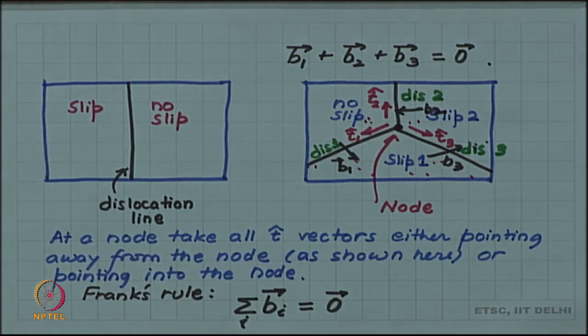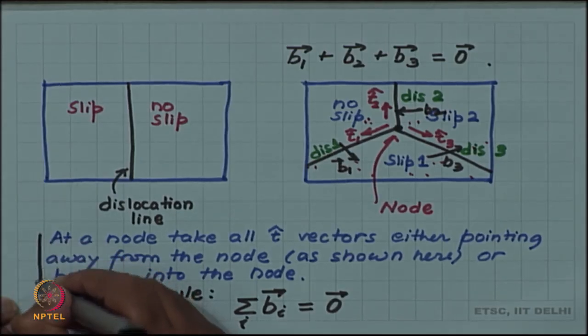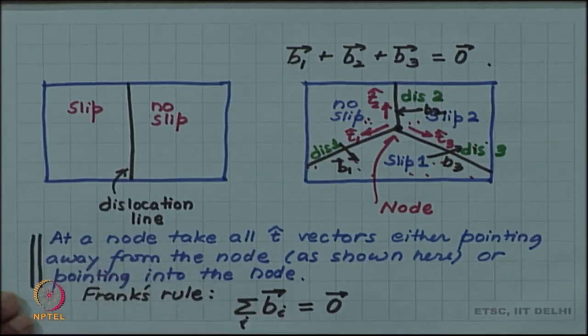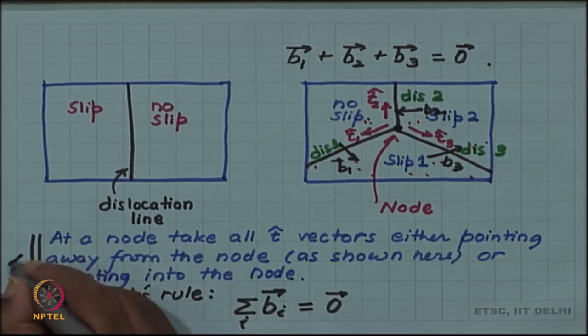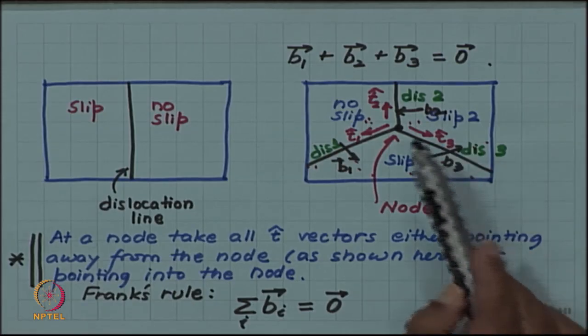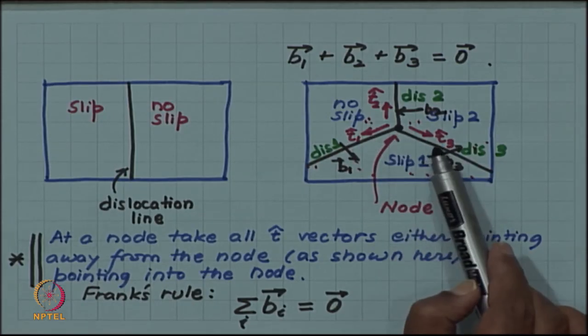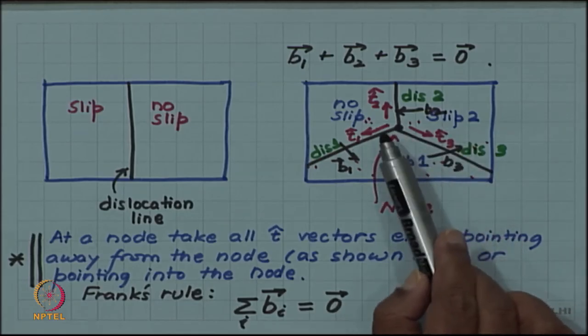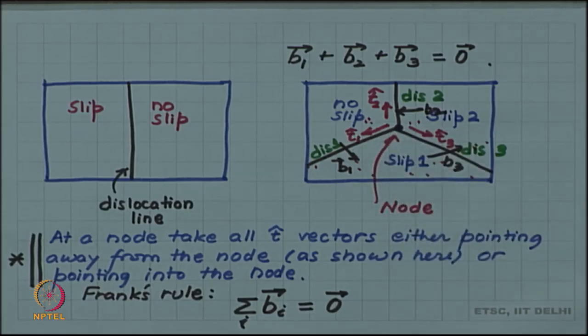This is an important rule to keep in mind, but the validity of the rule will depend on this convention. So if you take your t vectors arbitrarily then obviously this will not be satisfied. So it is important to keep in mind that at the node either you have to take all the t vectors going out or all the t vectors coming into the node. Then you will have this Frank's rule that the sum of the Burgess vector at the node will be 0.